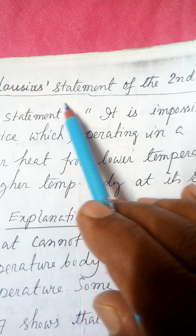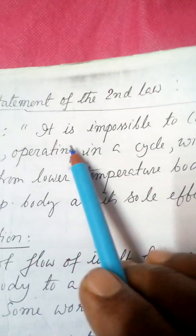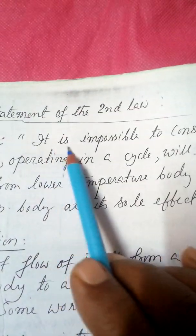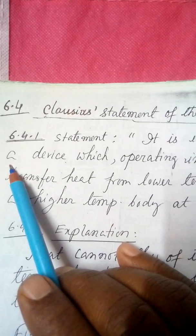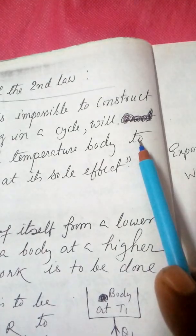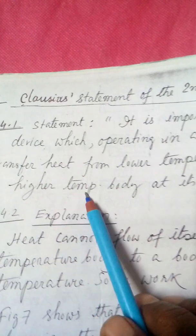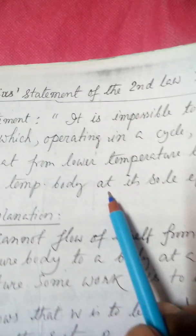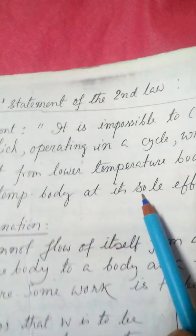The Clausius statement of the second law of thermodynamics states: it is impossible to construct a device which, operating in a cycle, will transfer heat from a lower temperature body to a higher temperature body as its sole effect.